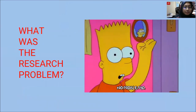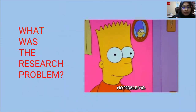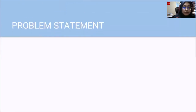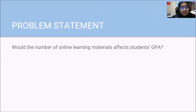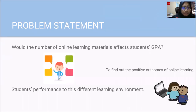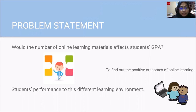So, what is the research problem? The problem statement for the study is: would the number of online learning materials affect students' GPA? It is a good statistical research problem because we attempted to find out the positive outcome of online learning, and we are also eager to know the students' performance in adapting to the new normal.